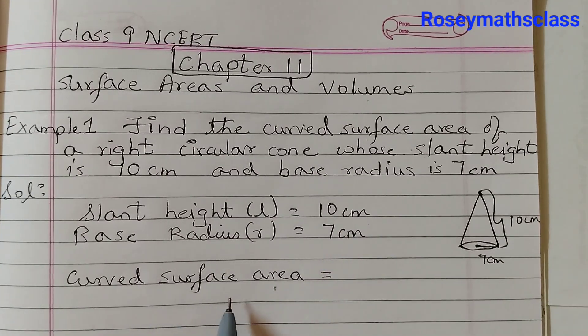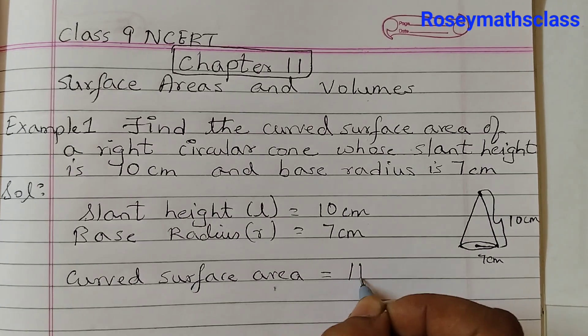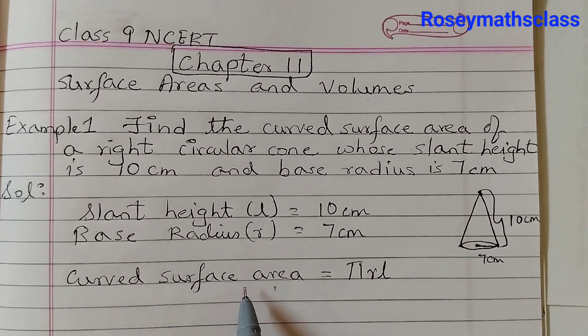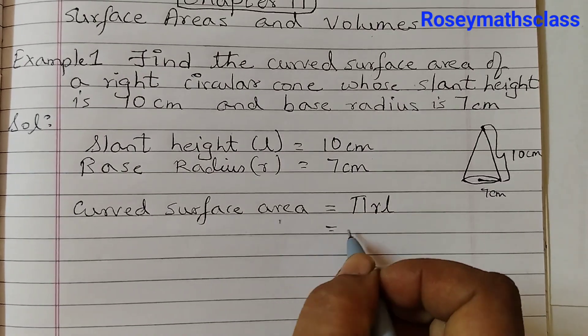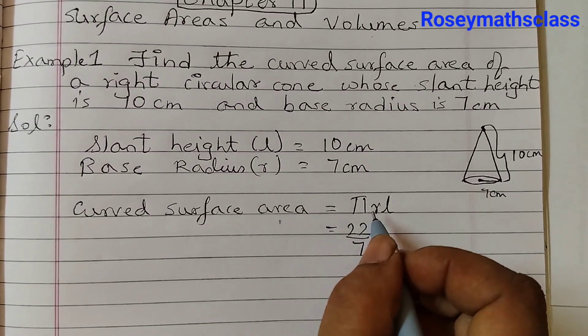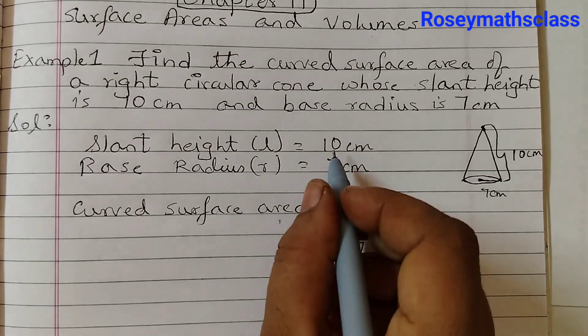Now the curved surface area of the cone is πRL. That is the formula for the curved surface area. So pi is 22/7, R is 7 cm, and L is 10.